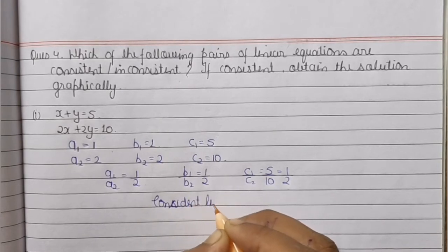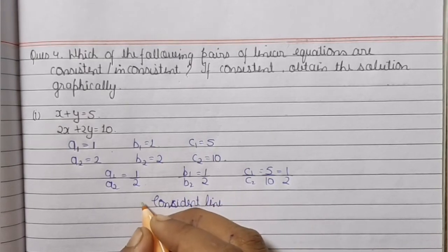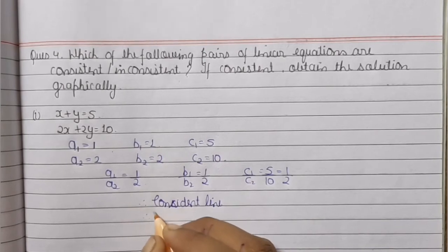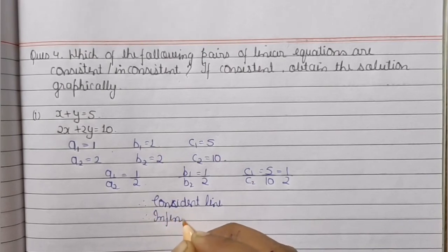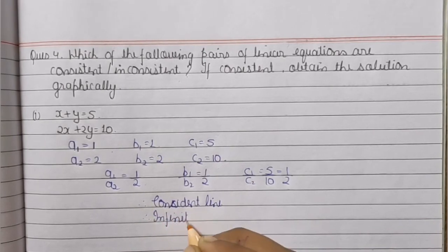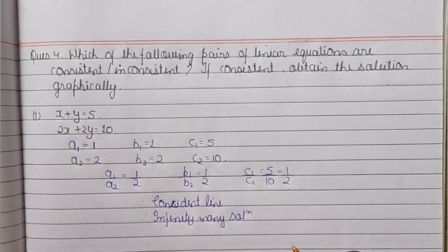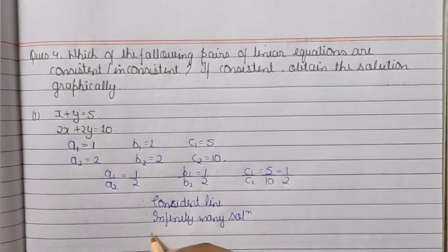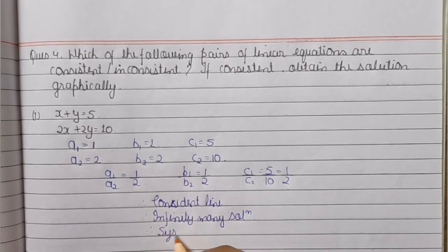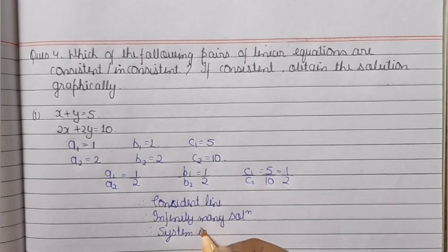We will get infinite many solutions. We will get a consistent system when we have at least one solution, and here we get infinitely many solutions. So the system is consistent.